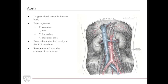The aorta is the largest blood vessel in the human body. It is composed of four structures: the ascending aorta, the arch of the aorta, the descending aorta, and the abdominal aorta. The first three structures are all located inside the thoracic cavity. The abdominal aorta is located in the abdominal cavity as it passes through the diaphragm at the level of the T12 vertebrae.